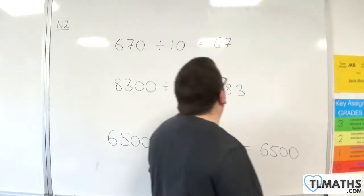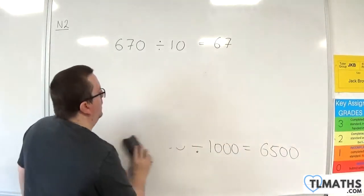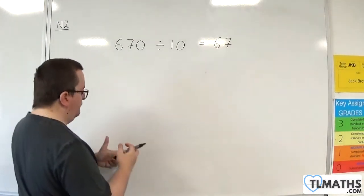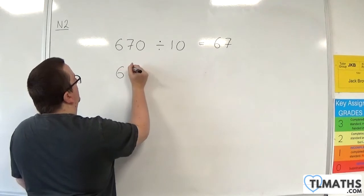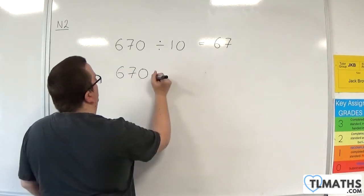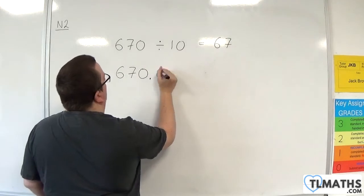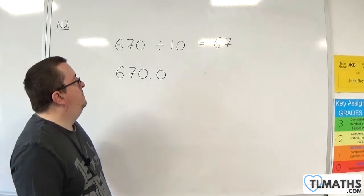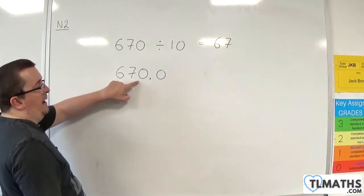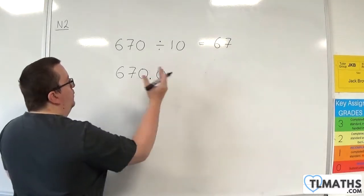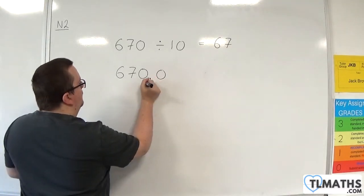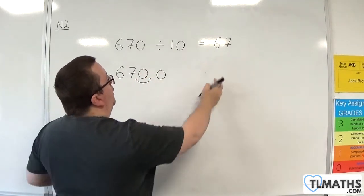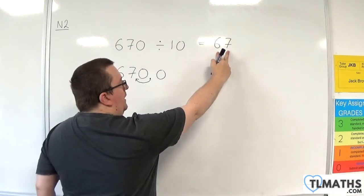So let's focus our attention on that first example. For example, 670 divided by 10. 670 can be written as 670.0. Now when I divide by 10, I move the decimal point to the left. When I multiplied, I moved it to the right. When I divide, I move it to the left. And so I end up with 67.00, which is precisely the same as 67.